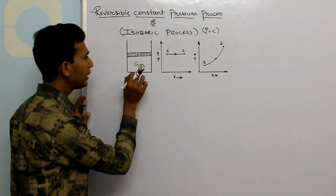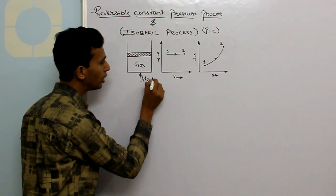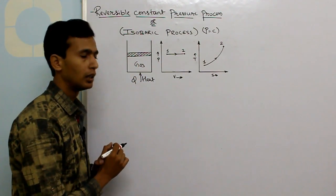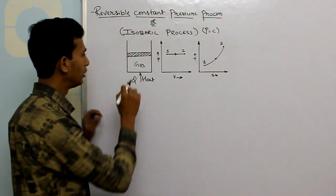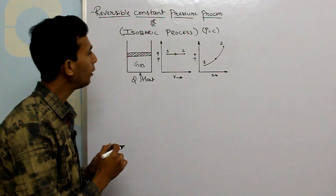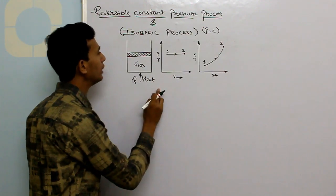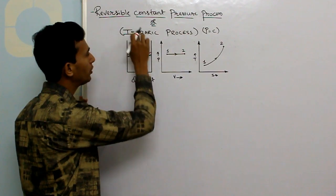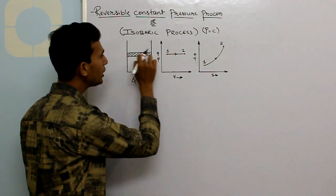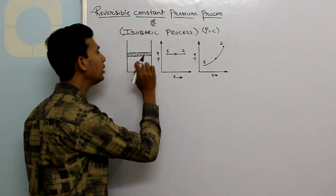Suppose you are carrying out the heating process — you are heating the gas by supplying Q amount of heat to the system. Because of the supply of heat, there will be a certain change in pressure and temperature of the gas. The pressure exerted by this piston before heating is the self-weight of the piston plus the atmospheric pressure acting on this piston.